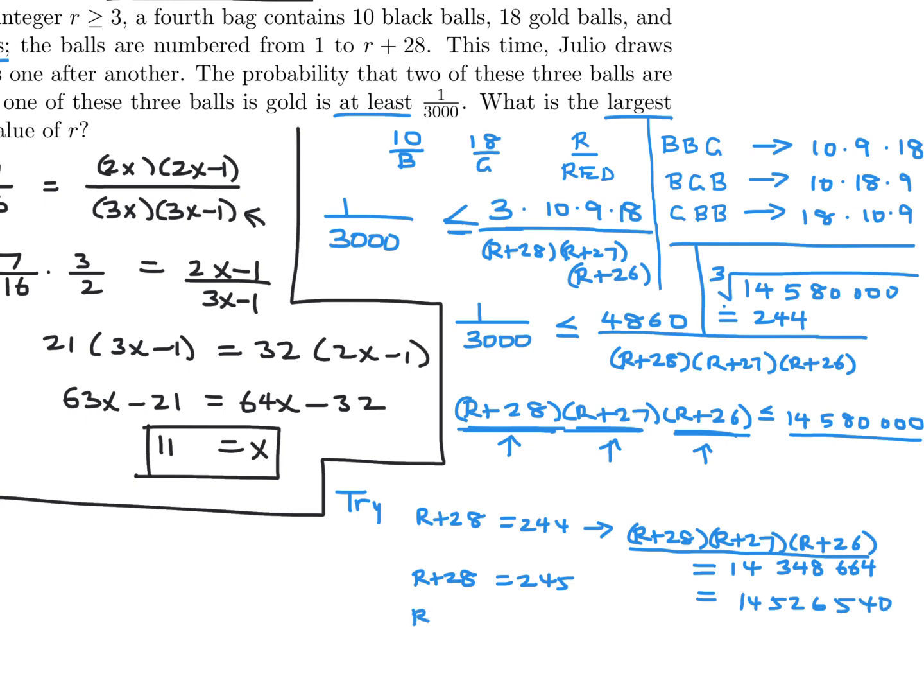So this one has gone over this guy. Anyway, so the largest that maintains that inequality is R plus 28 is 245, and therefore R is 217. And that is the answer to the question. R is 217.